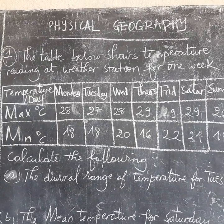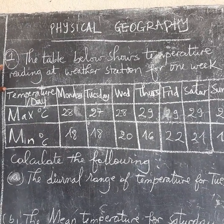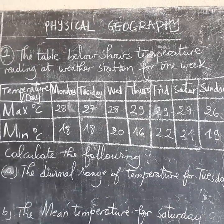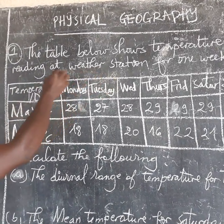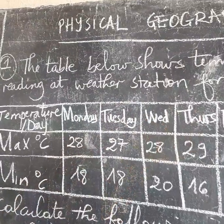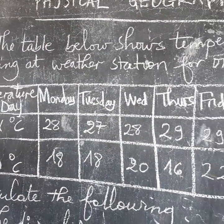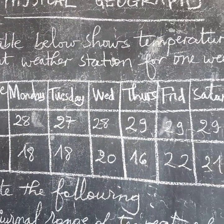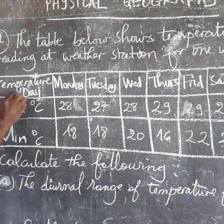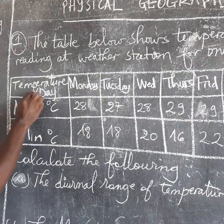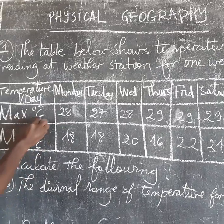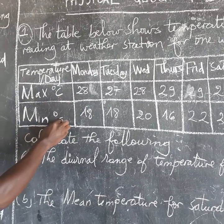We have one question here which is relating to calculation about temperature. The table below shows the temperature reading at a weather station for one week — not for a whole year, but only for one week. The table has maximum temperature and minimum temperature columns.